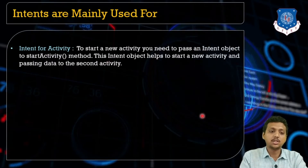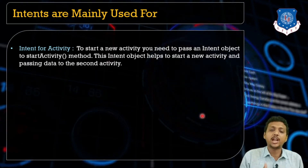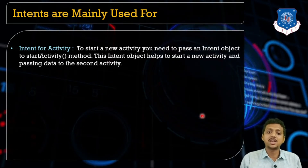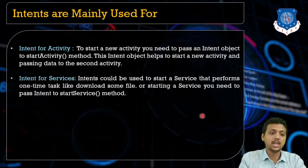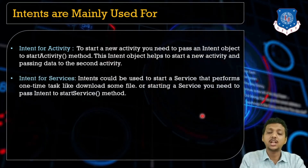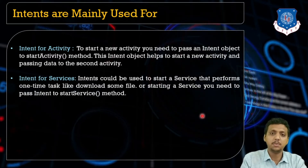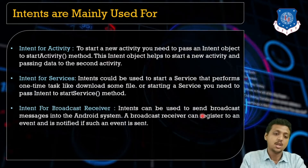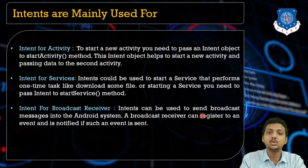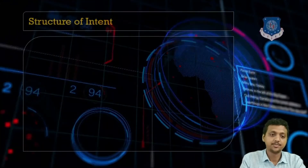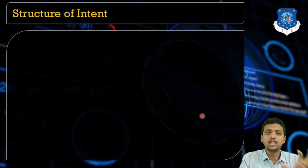Whenever you start a new activity you need to pass an intent object and call the startActivity() method. When you want to start a service with some data, you use intent. For broadcast receivers, intents are used to send a broadcast message into the Android system.